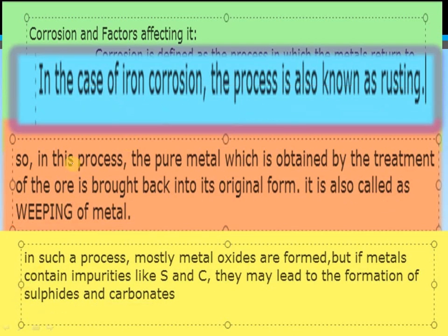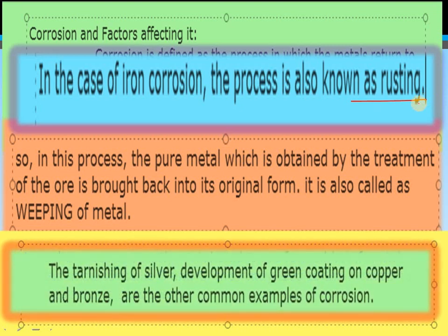In the case of iron, this corrosion process is known as rusting. In the case of silver, that is tarnishing of silver. And there is the development of a green coating on copper and bronze. Silver tarnish is converted into black color, and copper turns green. These are examples of corrosion.